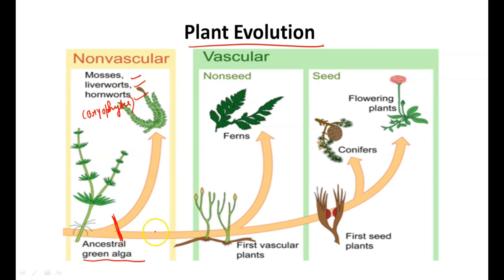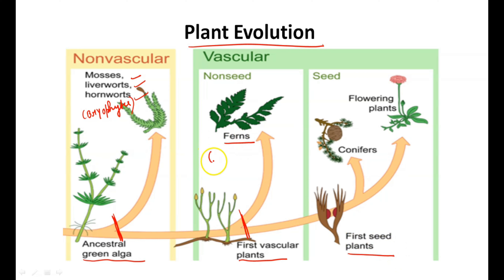The other lineage goes to the first vascular plants. From the first vascular plants, we have another common ancestor which gives rise to ferns and the first seed plants. Ferns are known as pteridophytes. So the first vascular plants, through evolution, give us pteridophytes and seed plants.